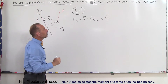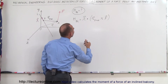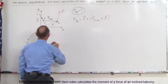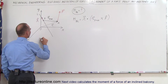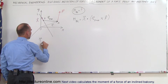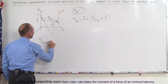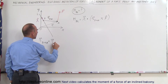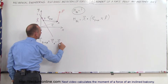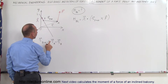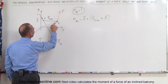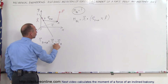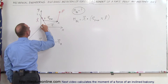Now how do we express R from B to A? R_BA can be written as R_A minus R_B — in other words, the position vector from the origin to A, minus the position vector from the origin to B.